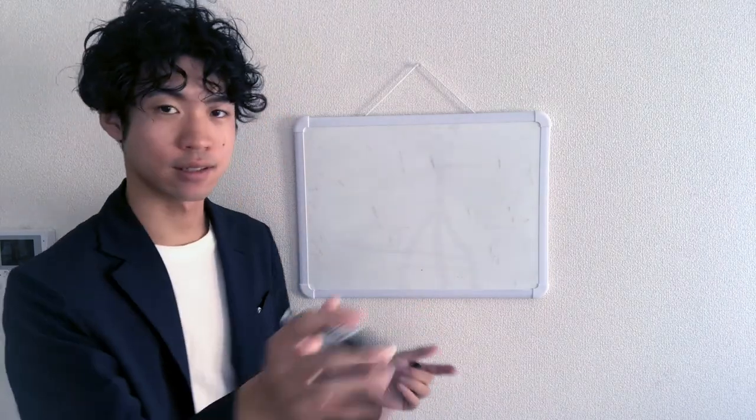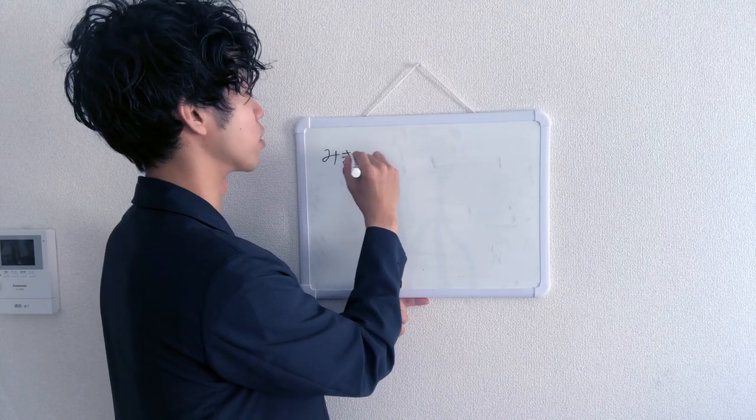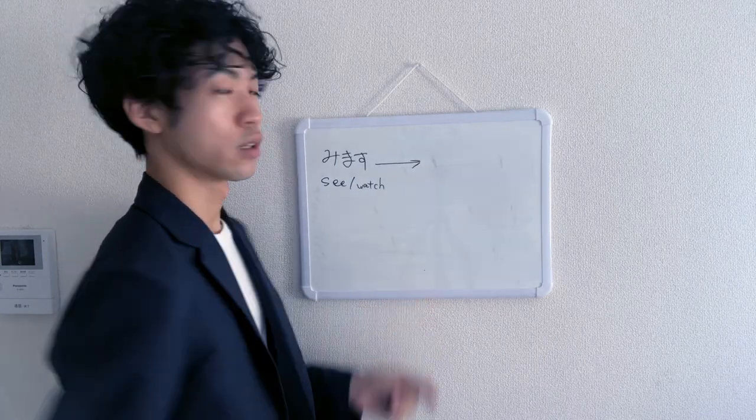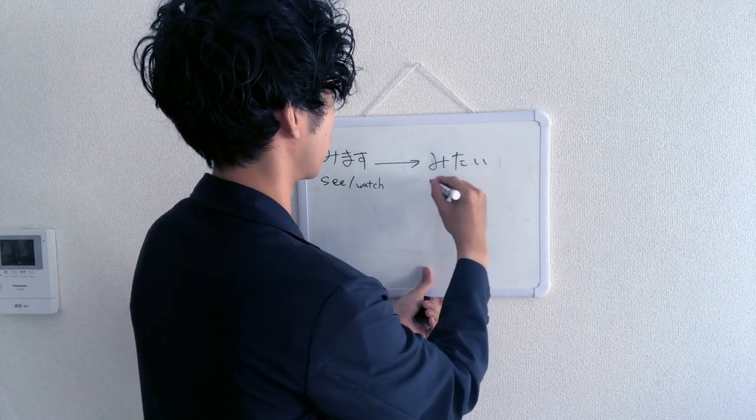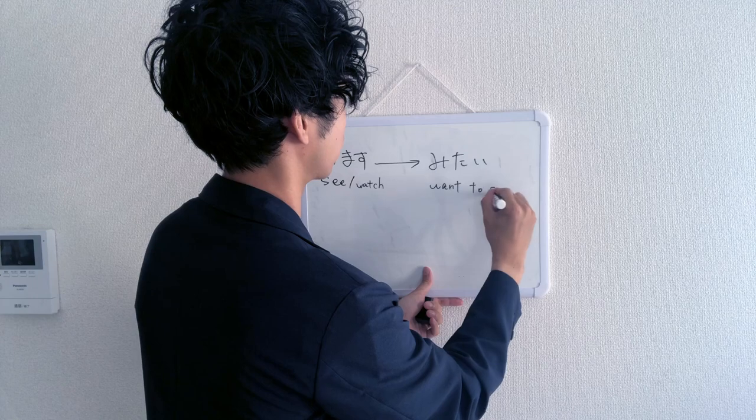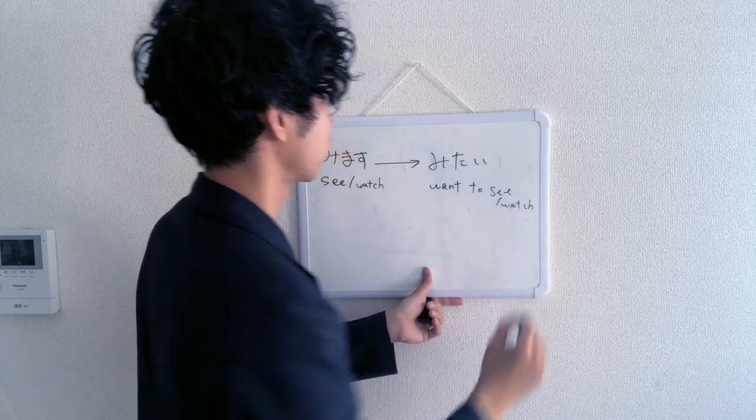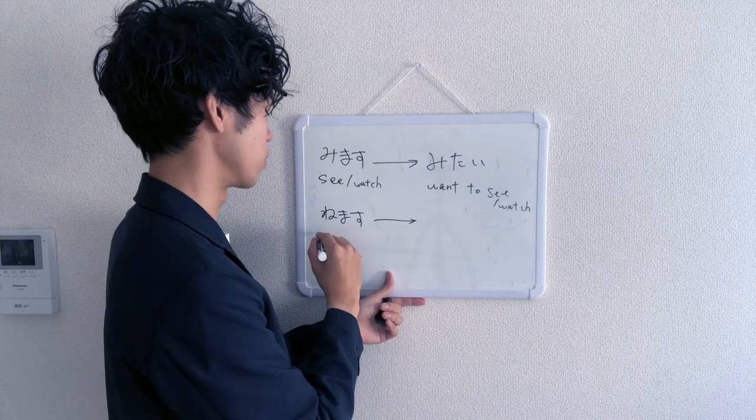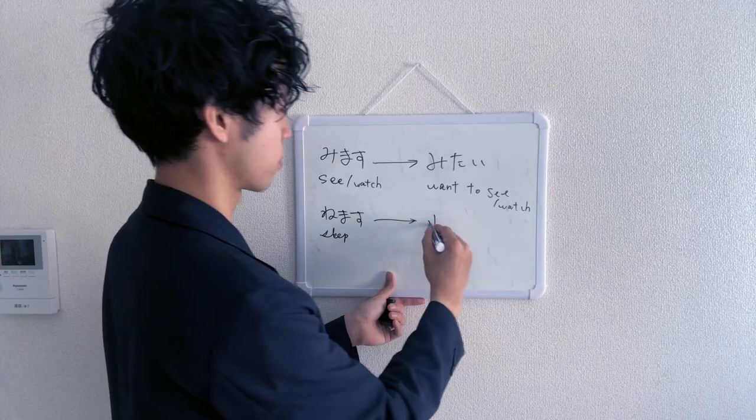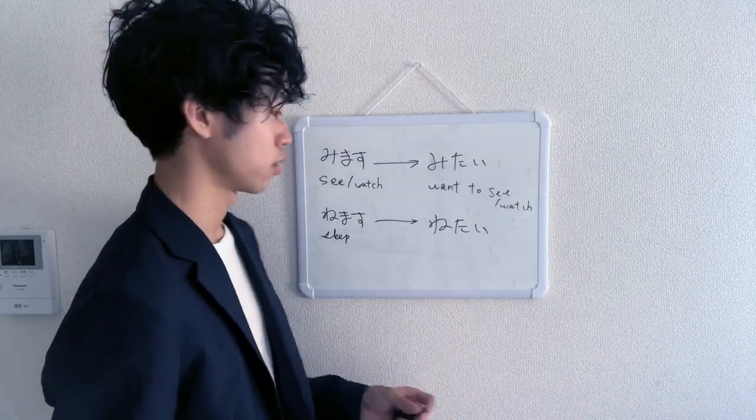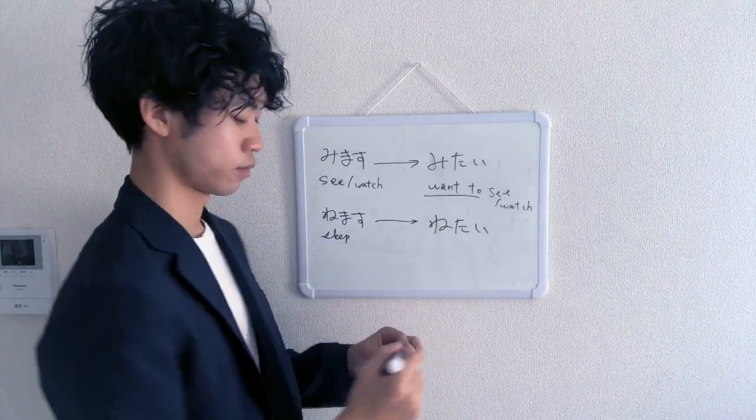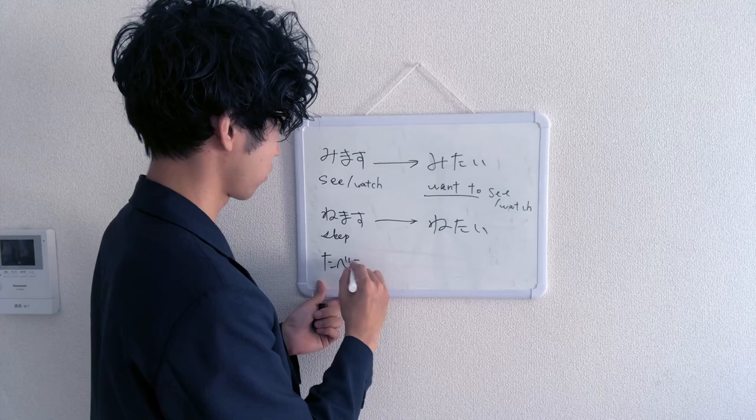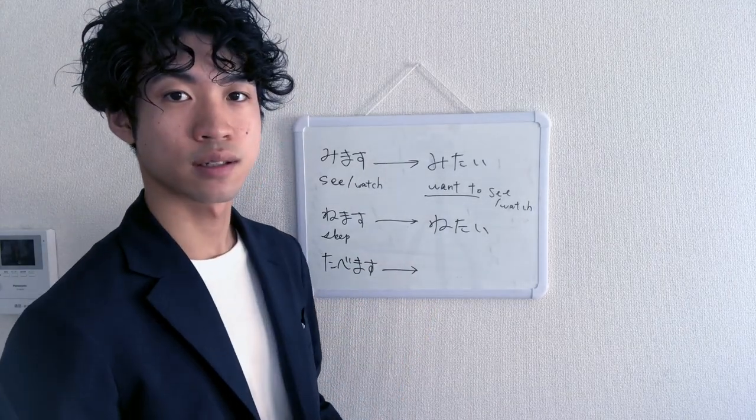Let's practice conjugating the verb to tai form. Well, there is no such thing as tai form. One time I said tai form in a lesson and the teacher corrected me. There's no tai form, so let's conjugate it to the tai. So how would you say, I want to see? Mitai. Want to see or watch. How would you say? Nemasu is to sleep.